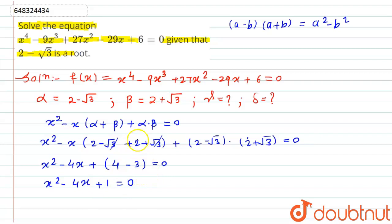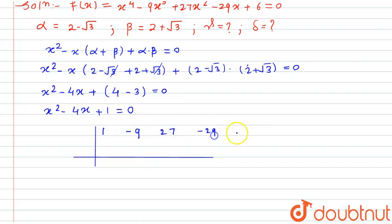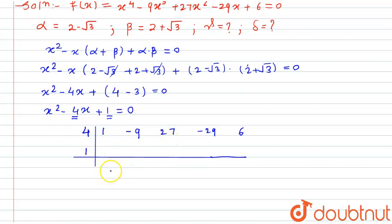To find the other two roots, we will use the division method, since this equation is of degree 4. We write the coefficients: 1, -9, 27, -29, and 6. We will divide using the factors from x² - 4x + 1, multiplying by -(-4) = 4 and -1. This is the double division method.